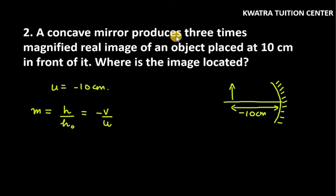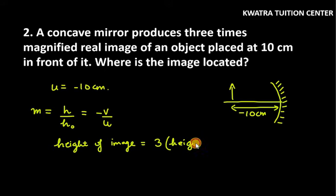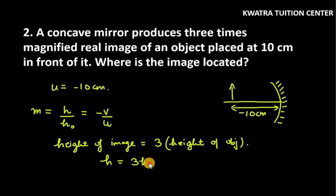But in the question, they said a concave mirror produces 3 times magnified real image. So you have to understand: the height of image is 3 times the height of object, meaning H_i equals 3 H₀.